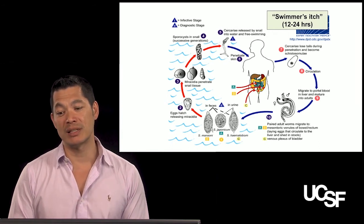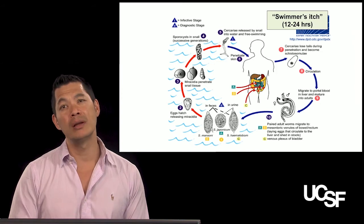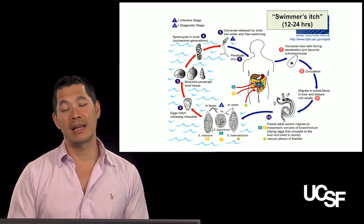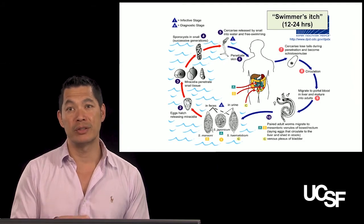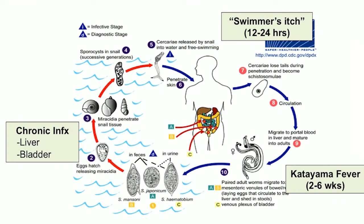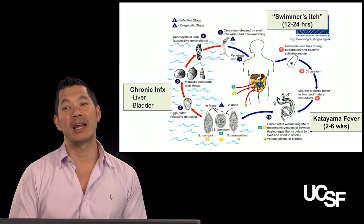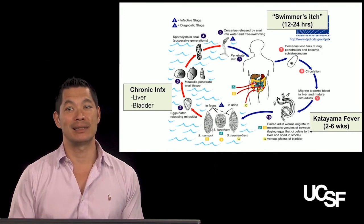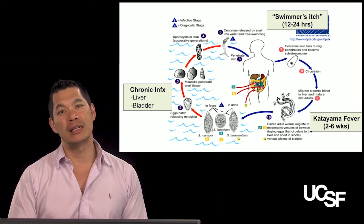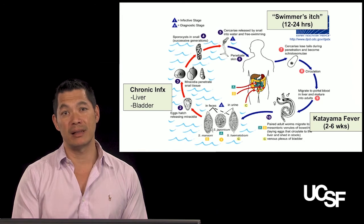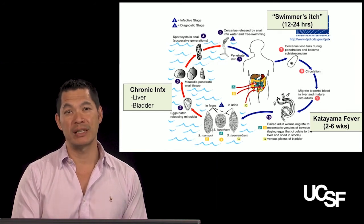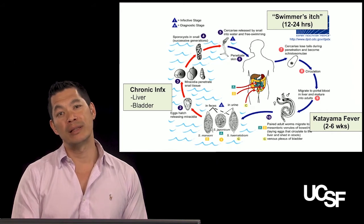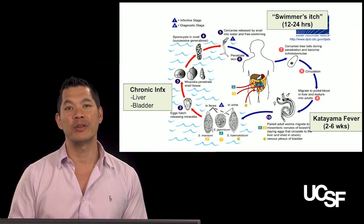In the first 12 to 24 hours you can get swimmer's itch, though that term also applies to non-human schistosomiasis from birds and mammals. Katayama fever occurs two to six weeks later — as the worm matures, antigens are expressed causing an immune reaction with rash and fever. In the chronic phase, schistosoma mansoni or japonicum can cause portal hypertension, varices, and GI bleeding, while schistosoma haematobium causes hematuria and bladder cancer risk.